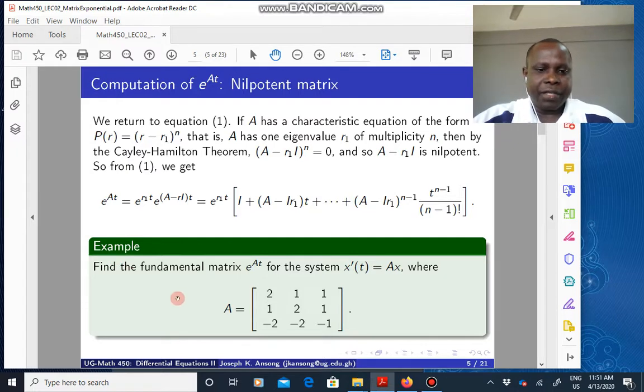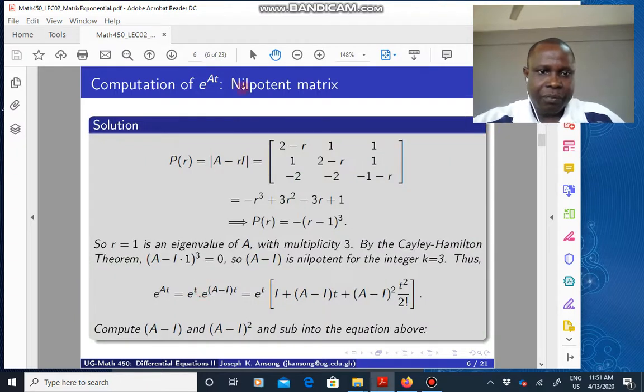So here's an example of a three by three matrix. We want to compute the matrix exponential of that. So the first thing is compute the characteristic equation. If you do, these are straight lines. It's not a matrix. So you are computing the determinant of this. If you do, you get this, which you can simplify to this expression here, which means that we have an eigenvalue R is equal to one, and it has a multiplicity of three.